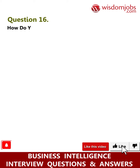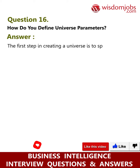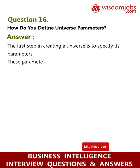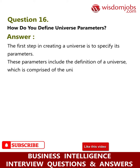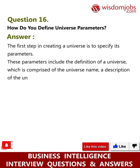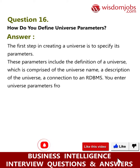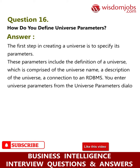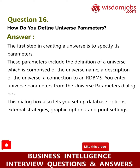Question 16: How do you define universe parameters? Answer: The first step in creating a universe is to specify its parameters. These parameters include the definition of a universe, which is comprised of the universe name, a description of the universe, and a connection to an RDBMS. You enter universe parameters from the universe parameters dialog box. This dialog box also lets you set up database options, external strategies, graphic options, and print settings.